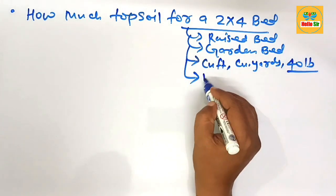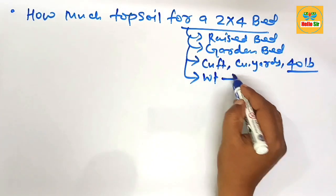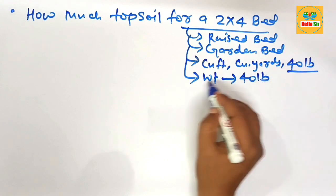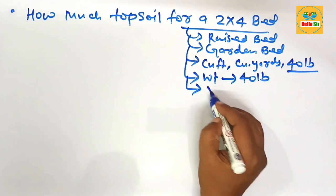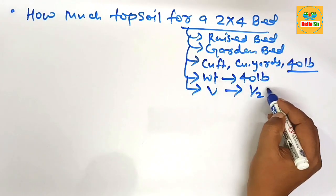Each 40 pound bag of topsoil yields a volume of about half a cubic foot.